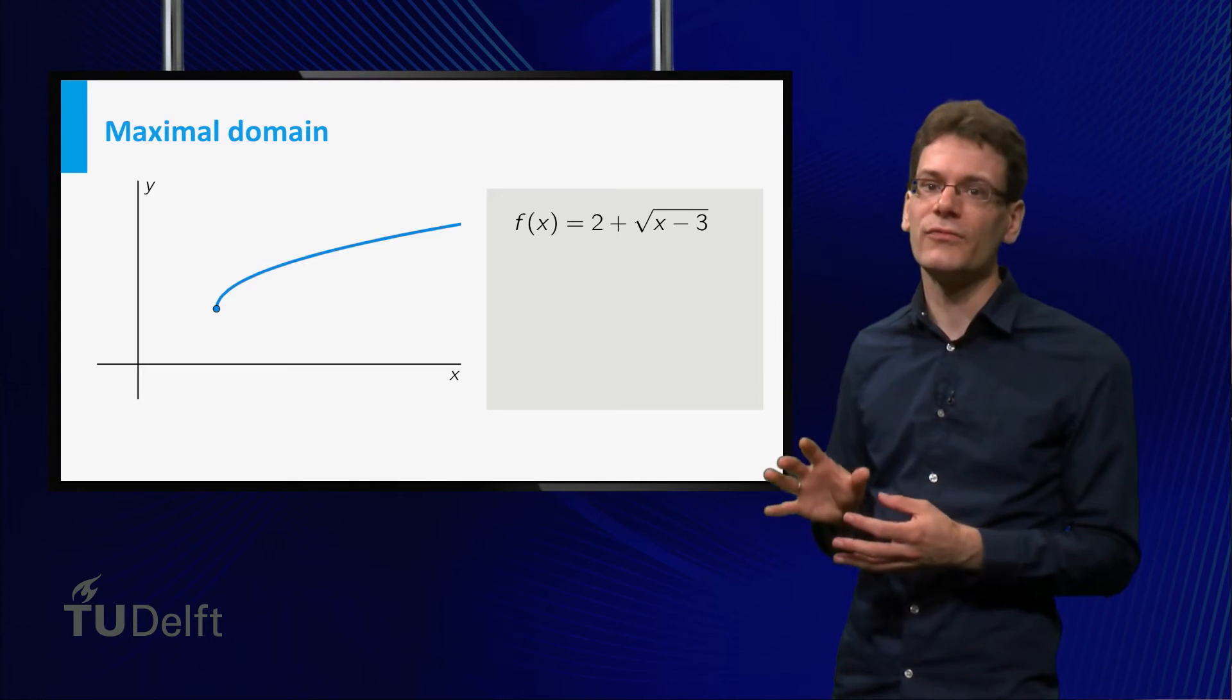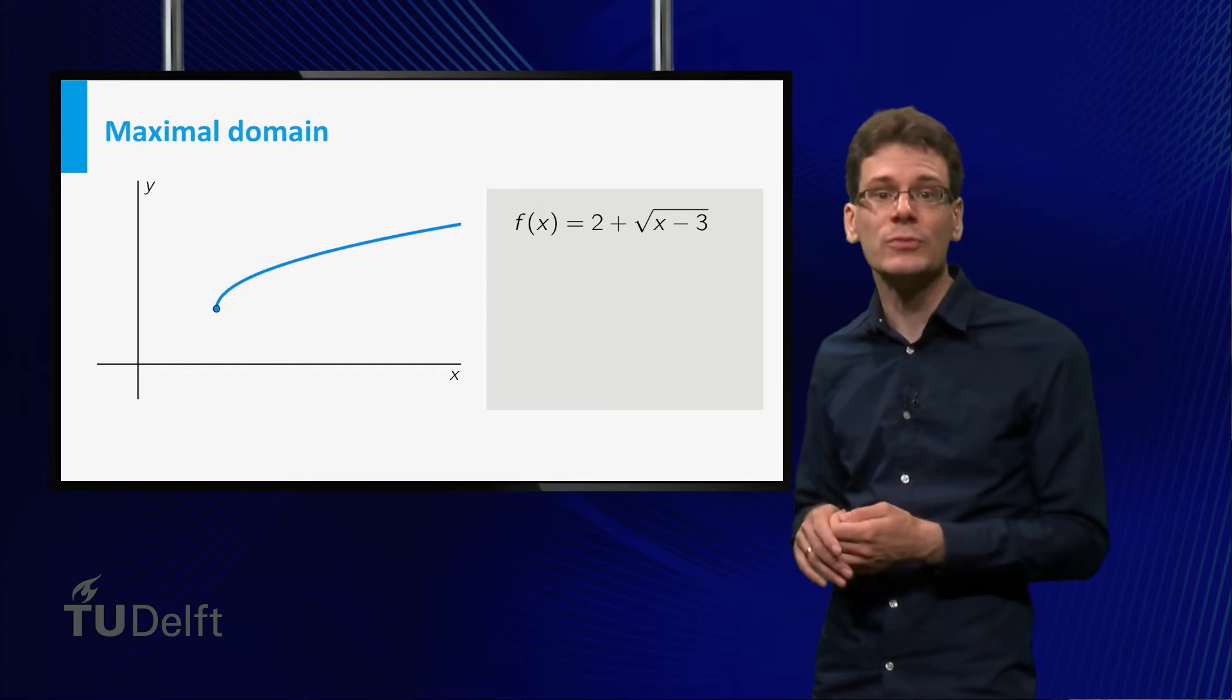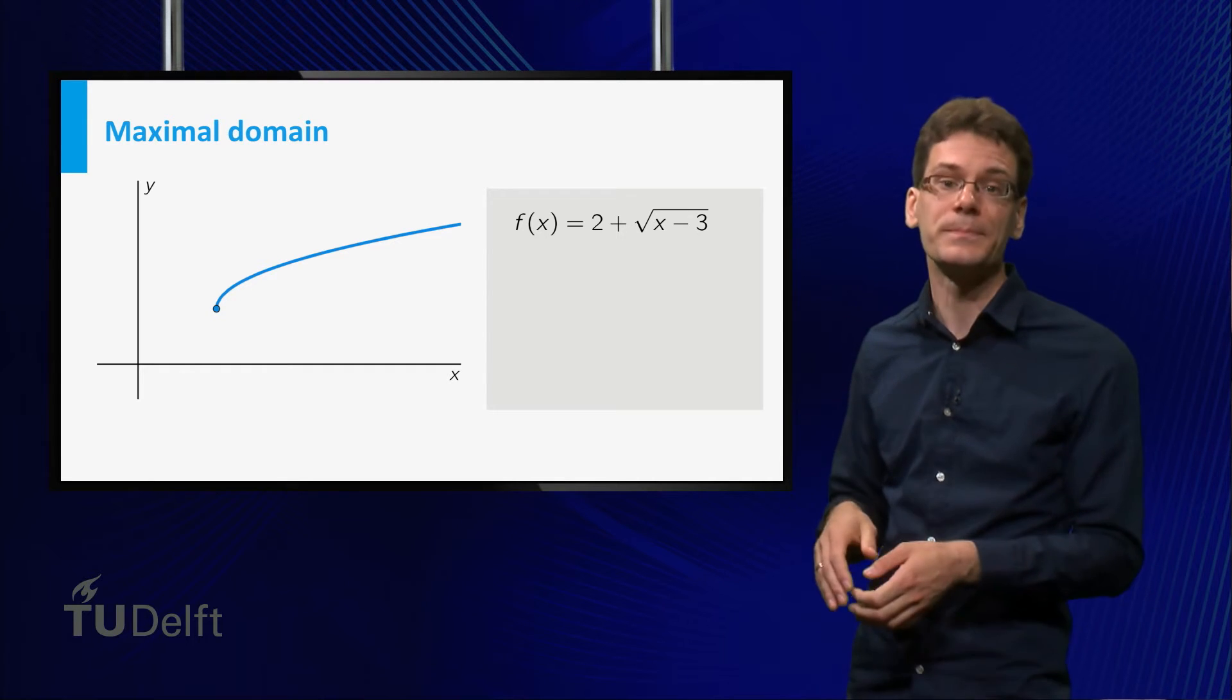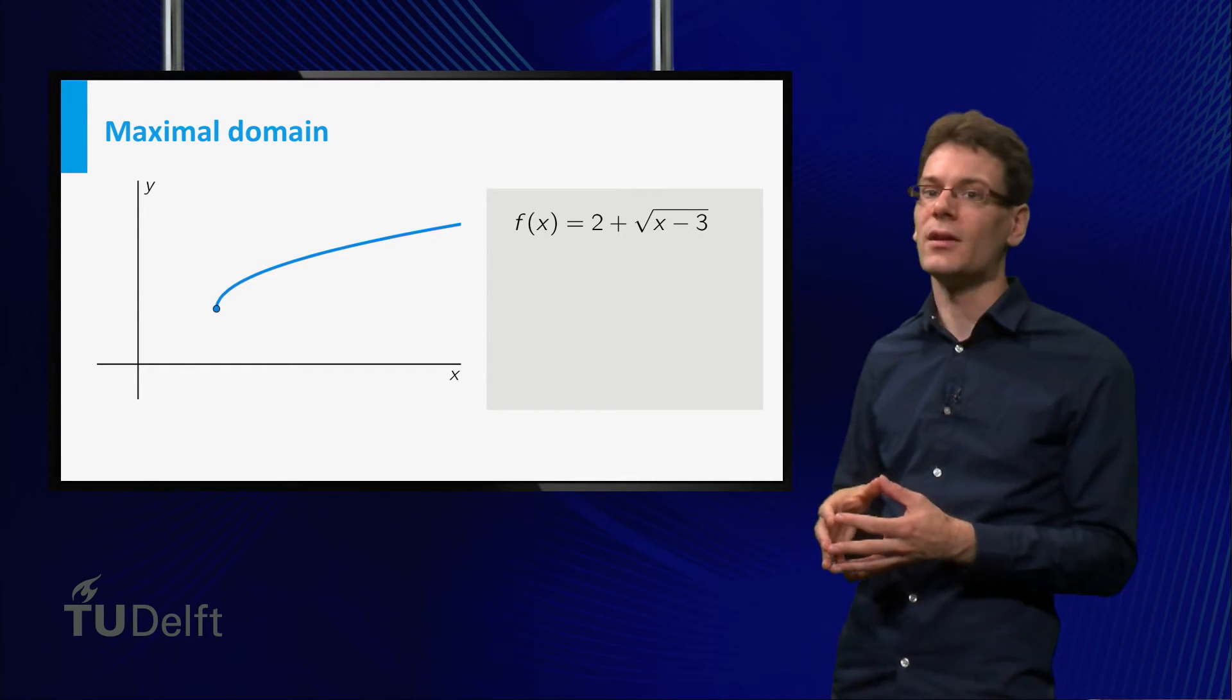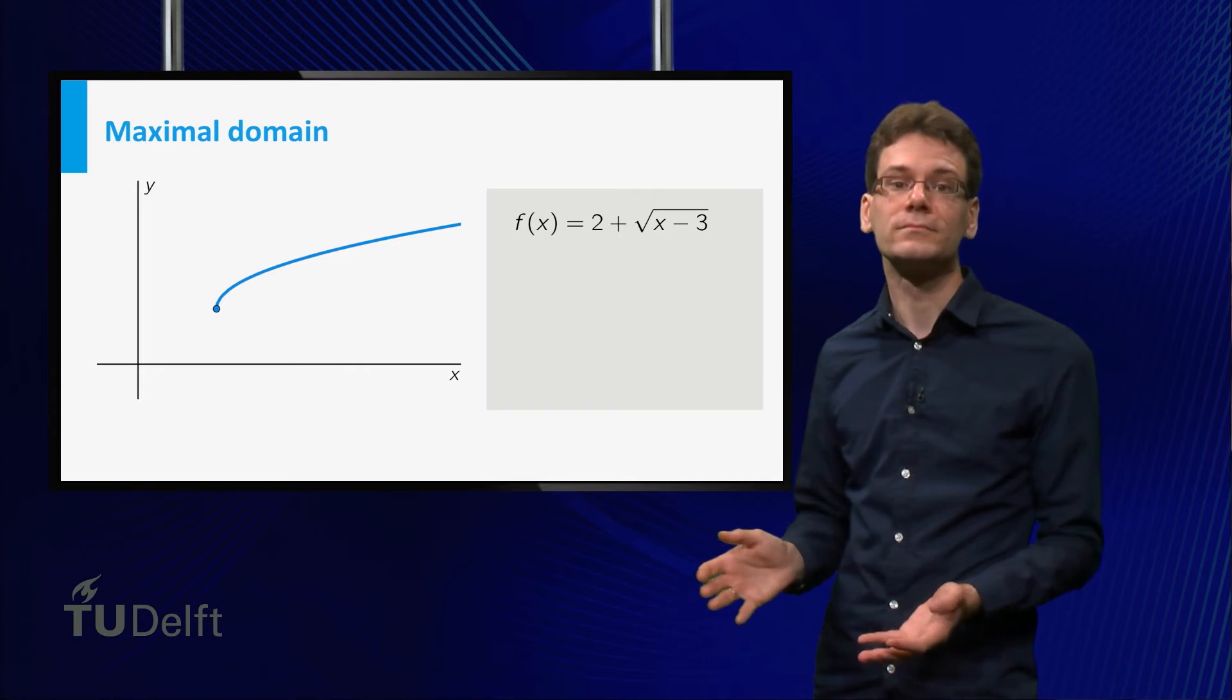As an example, consider the function f(x) equal to 2 plus square root of x minus 3. I did not specify the domain; what options do we have? Well, the only restriction is that we cannot take square roots of negative numbers. So in this case, the function is defined precisely for x minus 3 larger than or equal to zero.